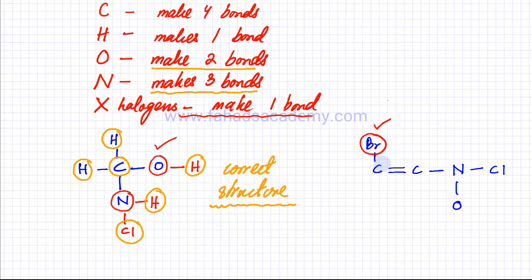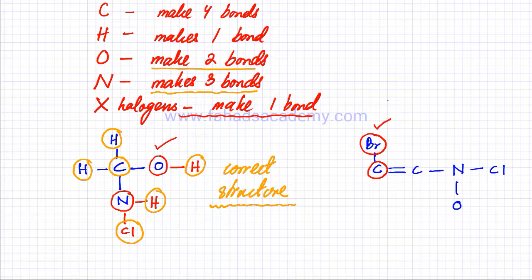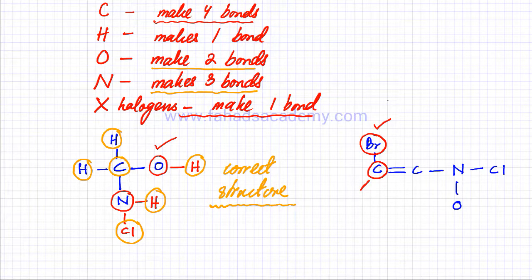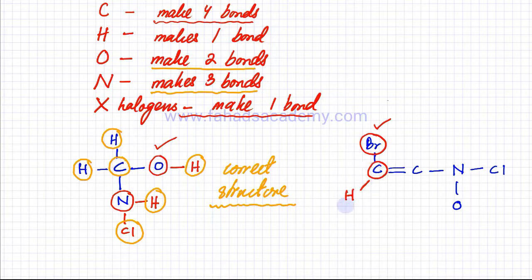Looking at the left carbon: it's making one bond on the left and two bonds on the right — a total of three bonds. But carbon was supposed to make four bonds, so there's one bond missing. To correct the structure I need to add another element — let's put hydrogen there. It's easy to put hydrogen everywhere because hydrogen just makes one bond, so the structure is automatically complete at that position.